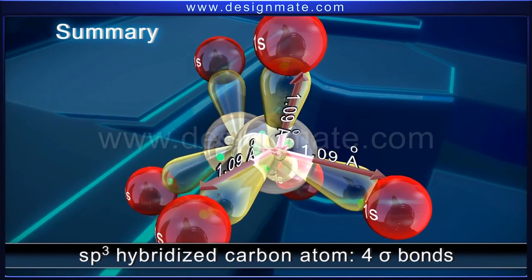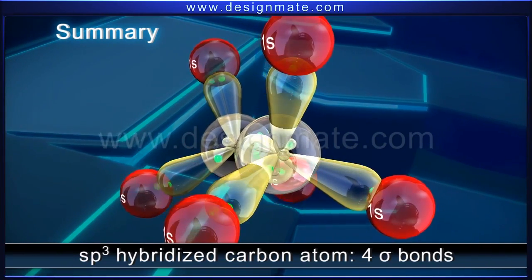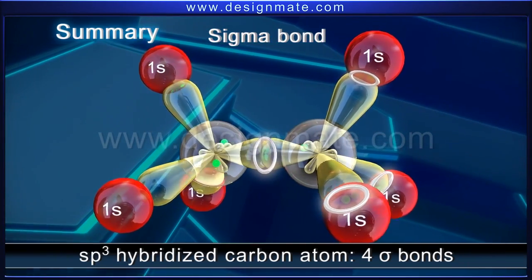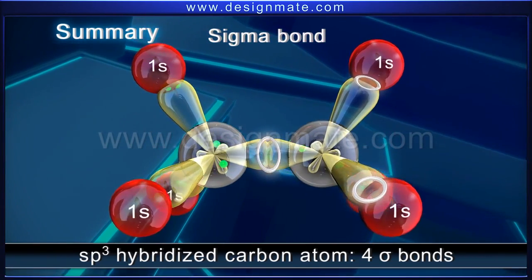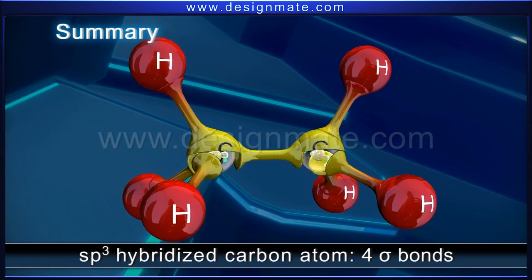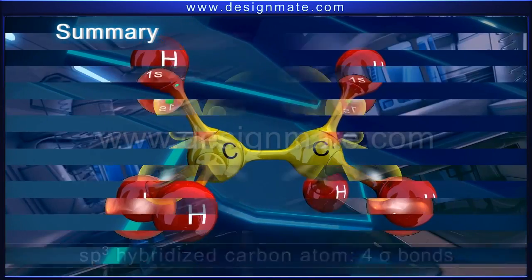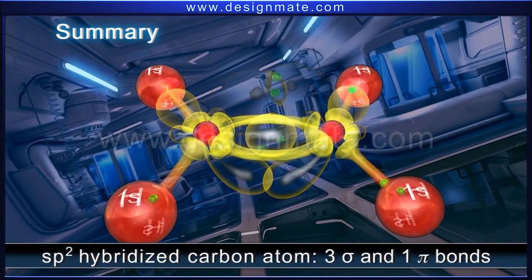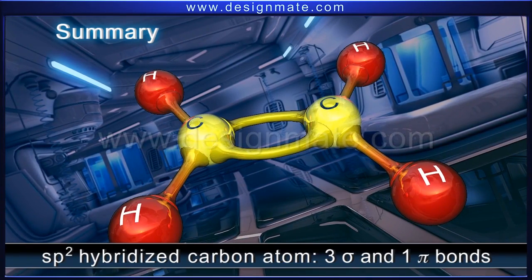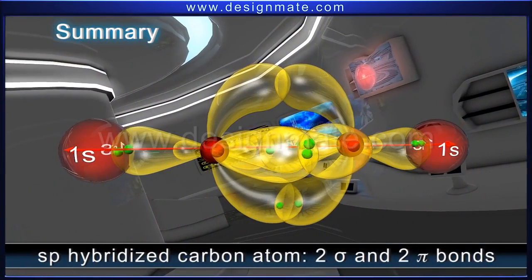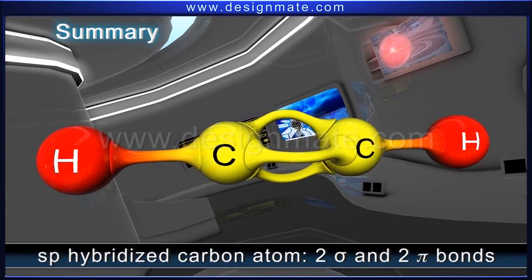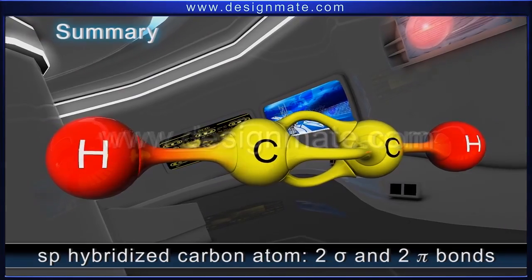To summarize, we have studied that whenever a carbon atom in an organic compound forms four sigma bonds directed along the corners of a regular tetrahedron, it is sp3 hybridized. A carbon atom that forms three sigma and a pi bond is sp2 hybridized, while the one in which it forms two sigma and two pi bonds is sp-hybridized.